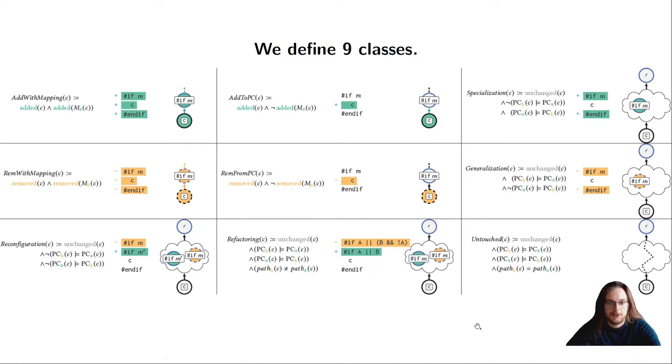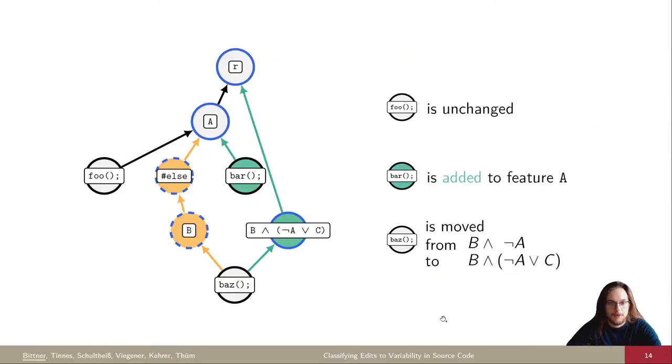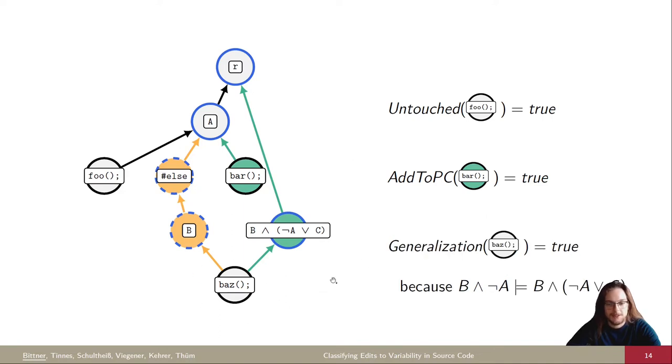In total, we define nine different classes, also capturing removals and moves, but also other classifications are possible. These are nine predicates we found useful when looking at certain use cases from our experience and related work. So we're going back to our example. We see that this insertion of the source code line bar is indeed an instance of the add to PC class we just saw. We refer to unchanged artifacts like the foo node as untouched, as they didn't get any changes. And we explain the change below for the source code line bus as a generalization because the set of products it is contained in has grown now. So previously it was assigned to B and not A and afterwards it's assigned to a formula which is weaker. So it's contained in more valid variants.